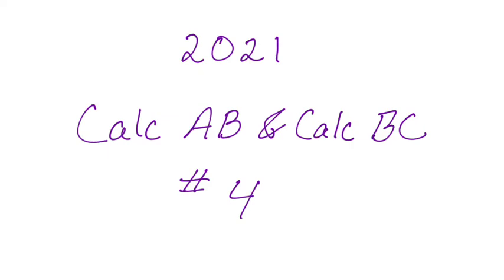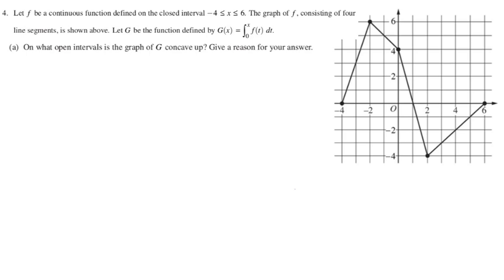Okay, in this video we're going to talk about number 4 on the 2021 Calc AB and Calc BC exams. This is a problem where you are given the graph of the first derivative. So the graph of f is given, and g(x) is the integral from 0 to x of f(t) dt.